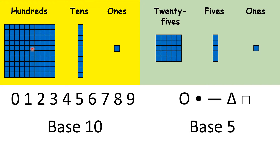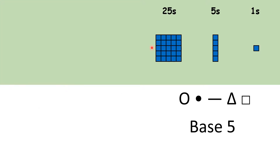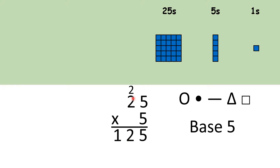Now we know that after hundreds, we have thousands, ten-thousands, and so on. But what is the next place value after twenty-fives in the Rigglesfordian number system? Well, because my number system uses five symbols, each place value is five times larger than the one before it, so we can work out twenty-five times five. That gives us one hundred and twenty-five, so our fourth place value column is the one hundred and twenty-fives.